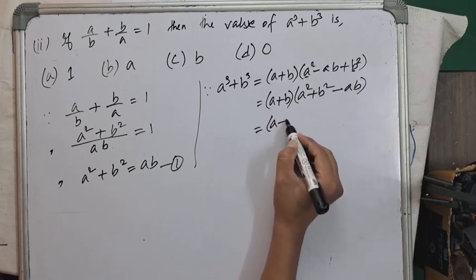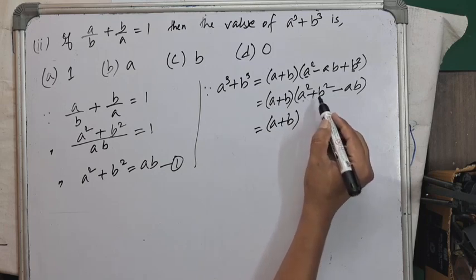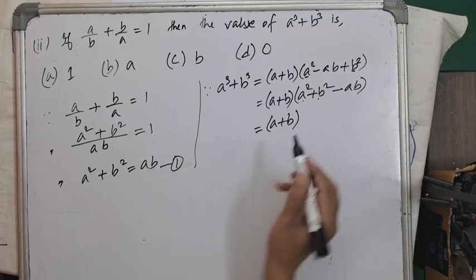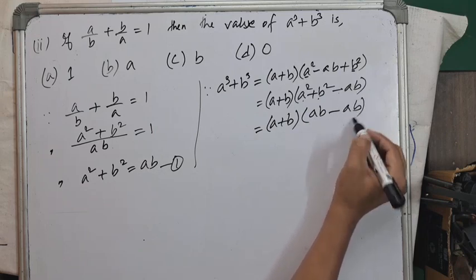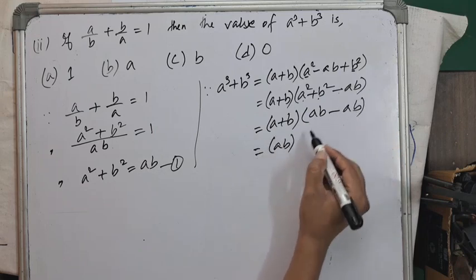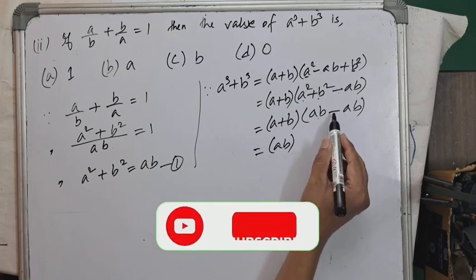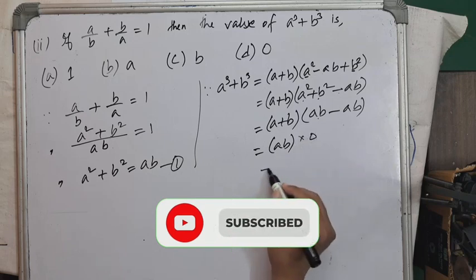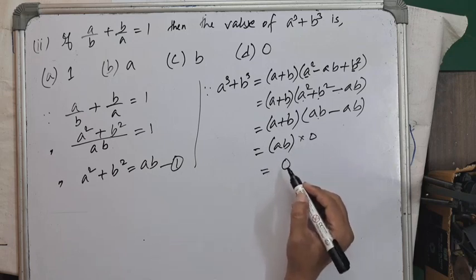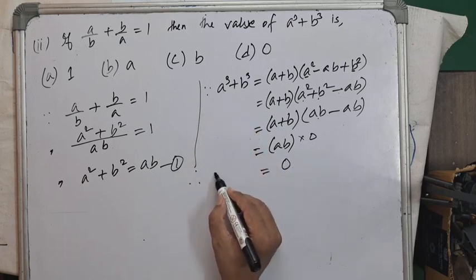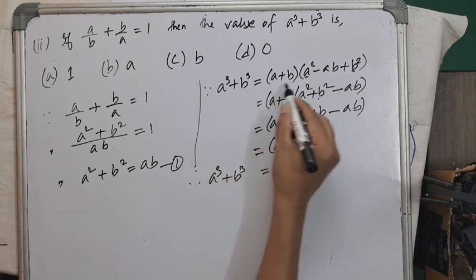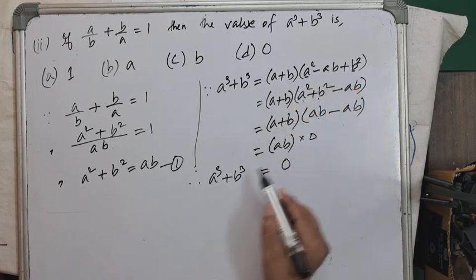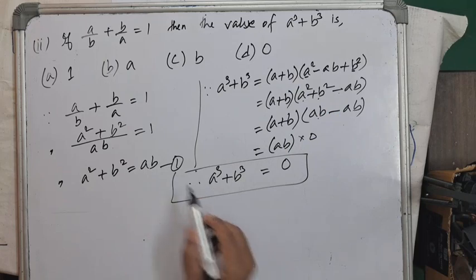From equation 1, a² + b² = ab, so we substitute: (a+b)(ab - ab) = (a+b)(0) = 0. Therefore a³ + b³ = 0, and option D is the correct answer.